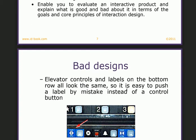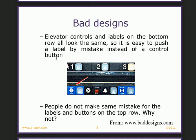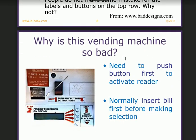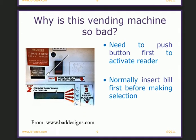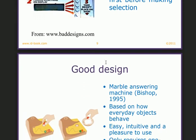Next we have bad designs. This is an example of bad design — a vending machine. Step one says 'push any button to start unit.' This is emphasizing that this vending machine is so bad that we are going to have to design a better version.